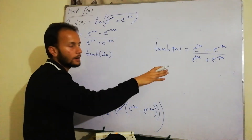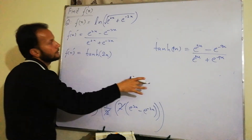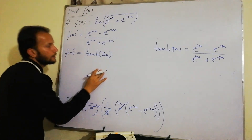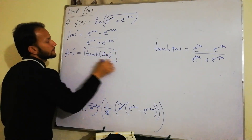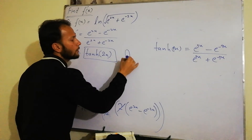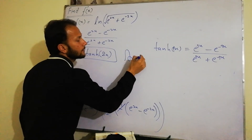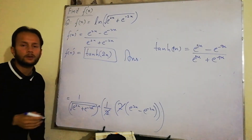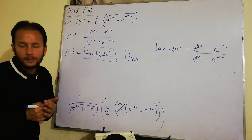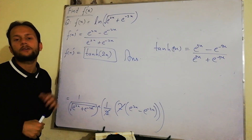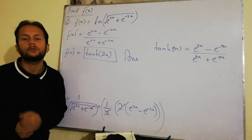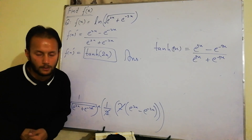So here is the final result, which is the first derivative: tanh 2x. I hope that is clear. If you still have any confusion, let us know in the comment section. We will resolve whatever problems you have. We will see you in the next video. Allah Hafiz, please.